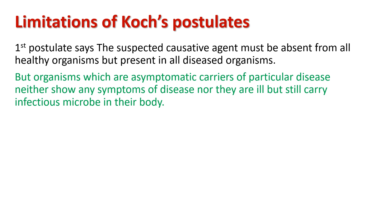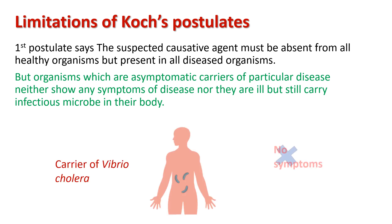There are also some limitations of Koch's postulates. The first postulate says the suspected causative agent must be absent from all healthy organisms but present in all diseased organisms. However, asymptomatic carriers of a particular disease neither show any symptoms nor are ill, but still carry the infectious microbe in their body. For example, a person may possess Vibrio cholerae in their body without having the disease. In that case, the first postulate is not true. Later, Robert Koch himself rejected the first postulate.